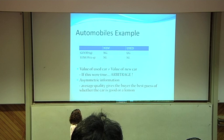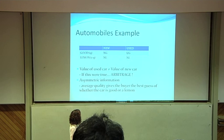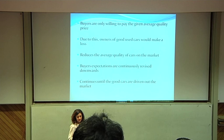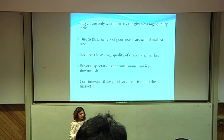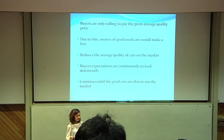This gives rise to asymmetric information, because the average quality of the cars can now only be used as the best estimate of the value of the car, to test if it is either good or a lemon. If buyers are only willing to pay the given average quality of the car, and at this price owners of good cars will make a loss, as the quality of the good car is greater than the price that buyers are willing to pay. This reduces the average quality of cars in the market as a whole. Because of this, buyers' expectations are revised downwards, and no good cars are going to be sold in the market — so the bad drives out the good again.